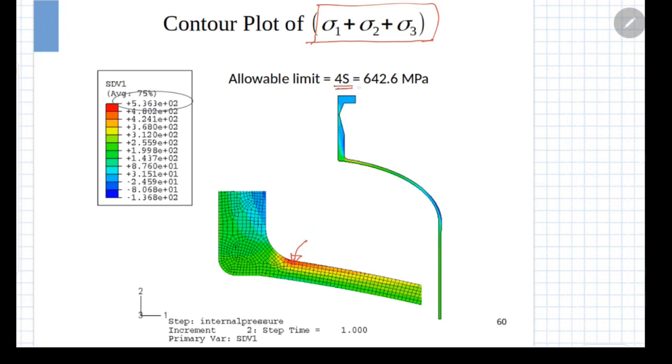For example, in the problem that we solved earlier using plastic collapse, for the same problem, the 4 times allowable stress is 642.6 MPa and the highest value of the summation of principal stress as can be seen here is 536.3 MPa, which is smaller than what is allowed. So this particular geometry satisfies the requirement of local failure check.